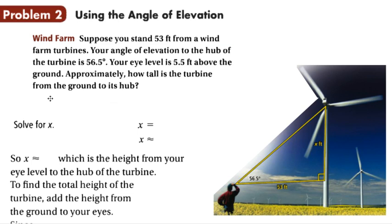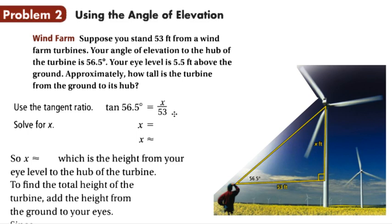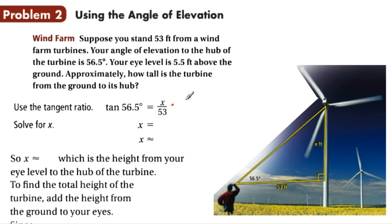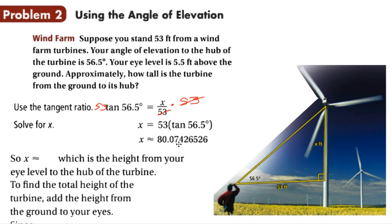We need to figure out what trig function to use. At this angle, x is the opposite side and 53 feet is the adjacent side. The trig function that uses opposite and adjacent is the tangent function. So: tangent of 56.5° = x / 53. Multiply both sides by 53, giving x = 53 × tan(56.5°). Plugging that into the calculator, x is approximately 80.1 to the nearest tenth.